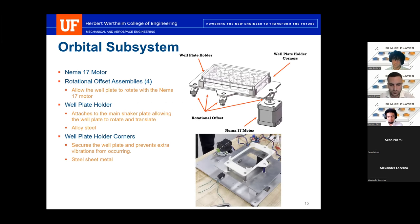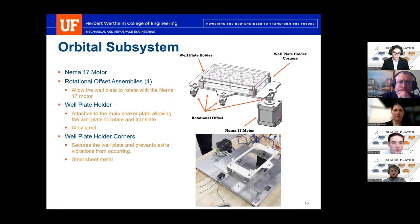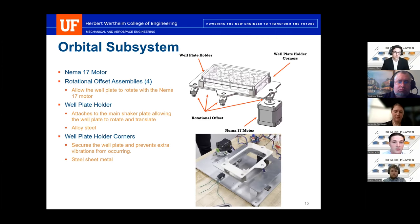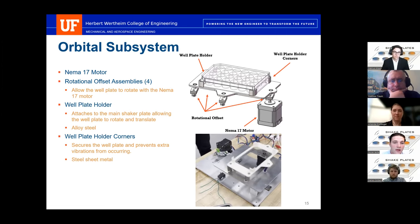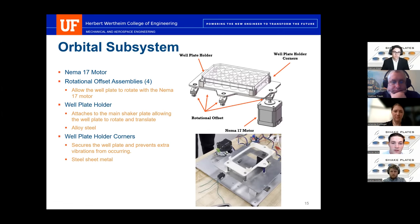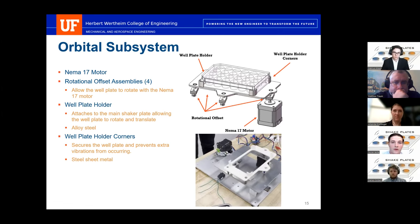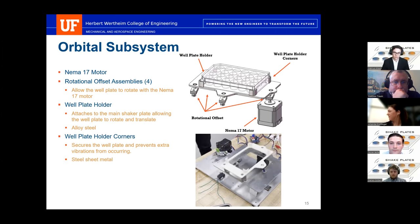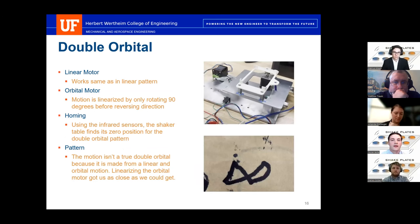For our orbital subsystem, we use the same NEMA 17 stepper motor. We have four rotational offset assemblies that allow the well plate to rotate from the input of a separate motor. The well plate holder attaches to the main shaker plate and is made of alloy steel. Well plate holder corners made of steel sheet metal secure the well plate and prevent extra vibrations. A video shows just the rotational orbital pattern in action.